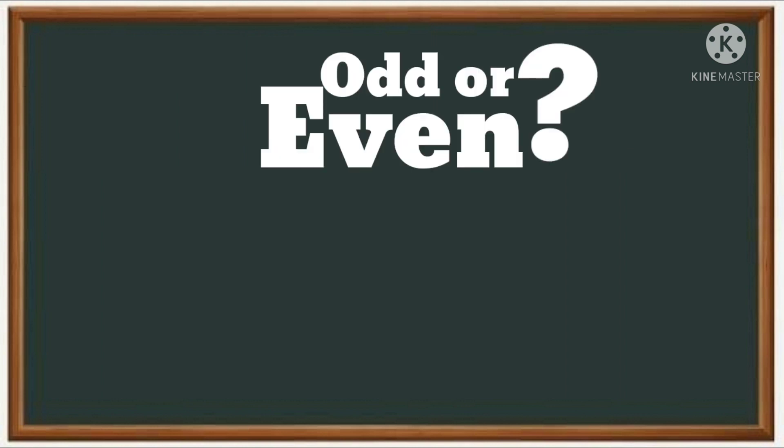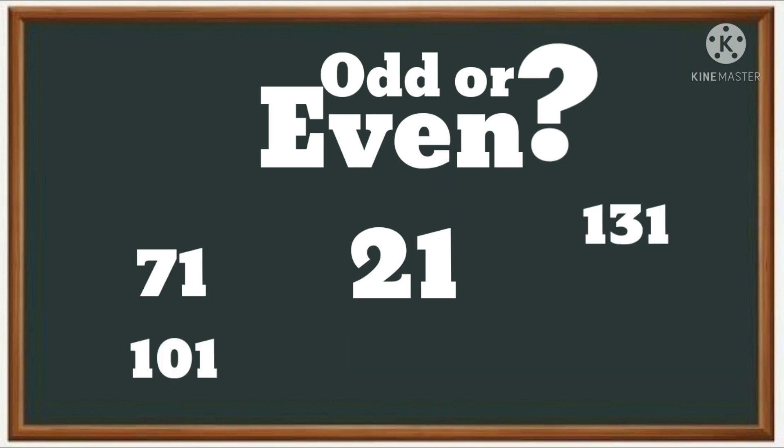Let's play a small game called Odd or Even. Our first number is 21. Is 21 even or odd? Yes, it's odd because the last number is one. One is odd, so 21 is odd. So all the numbers that end with one are odd.